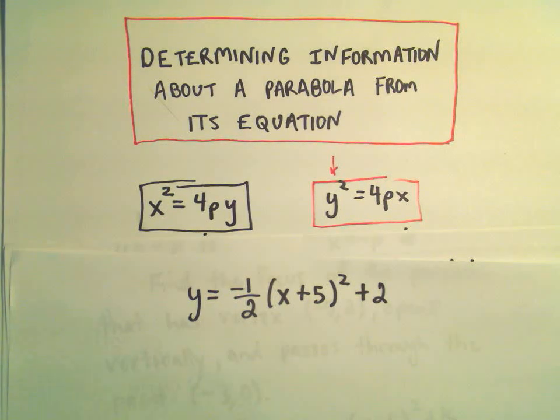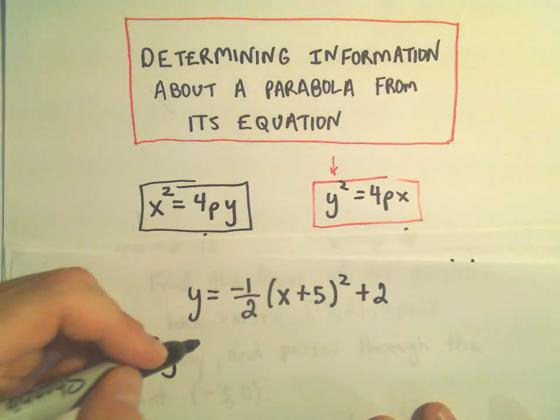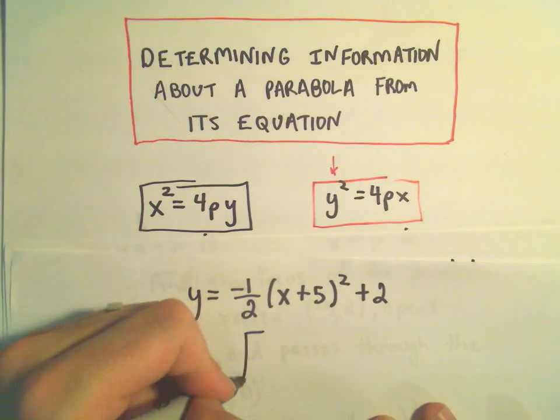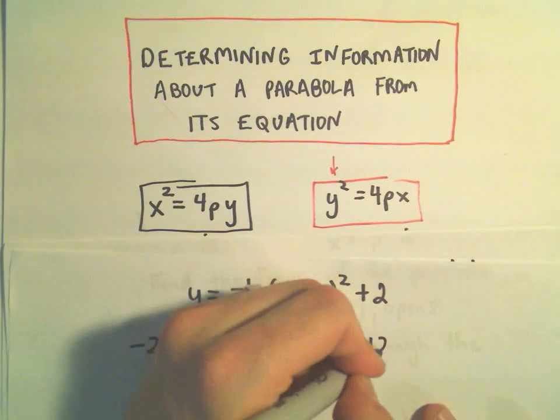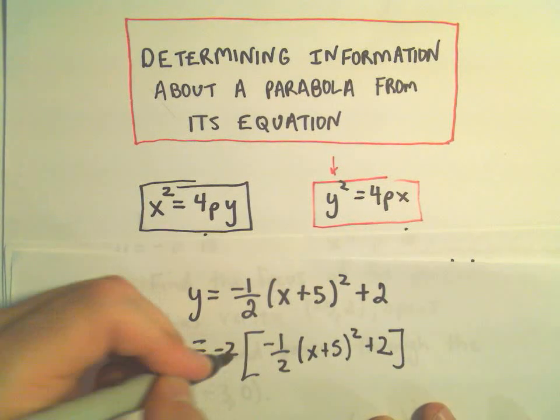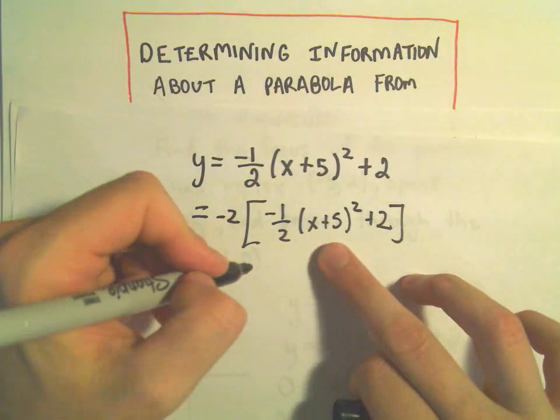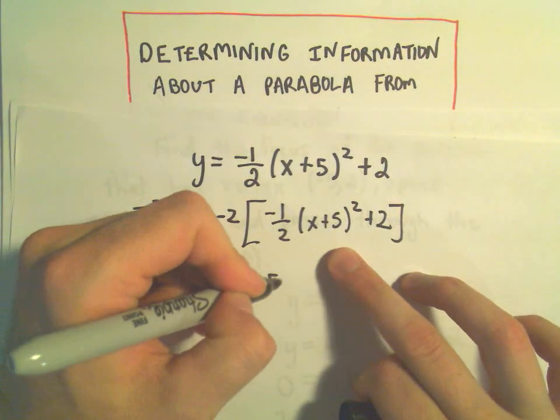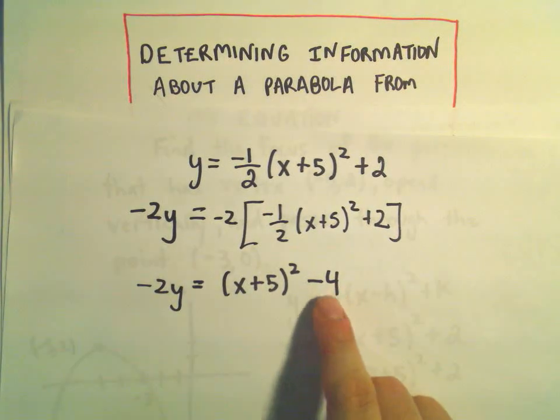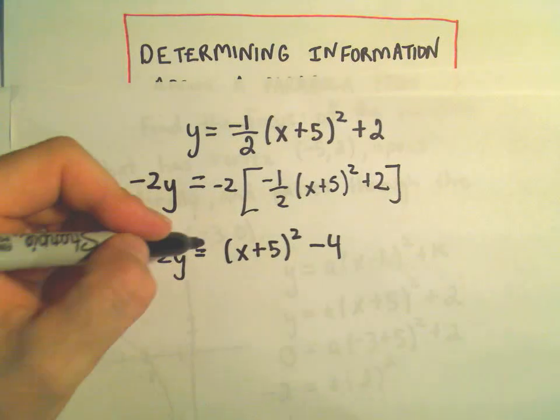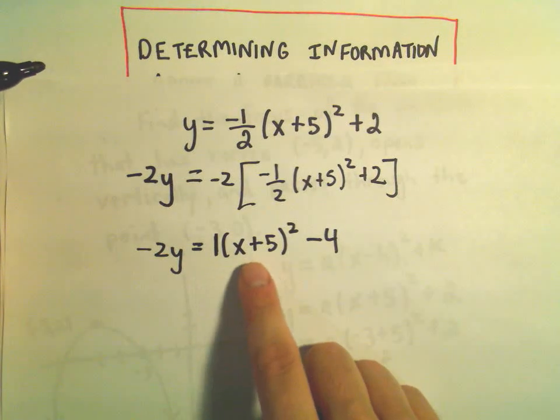So I'm going to multiply both sides by negative 2. We'll get negative 2y on the left. If we distribute, we'll have positive (x + 5) squared minus 4. I don't really care about the negative 4. All that I want is a coefficient of 1 in front of my squared term.